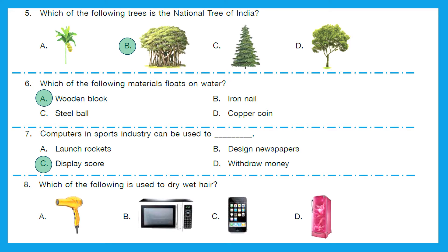Question 8: Which of the falling is used to dry wet hair? You must have seen your mom using it or your sister using it. A is dryer. B is microwave. C is mobile. And D is fridge. So we use option A that is dryer to dry our wet hair.